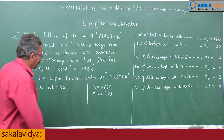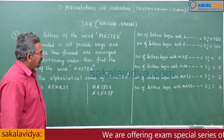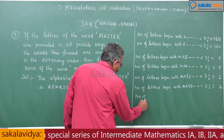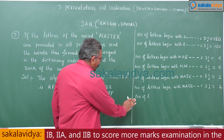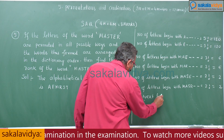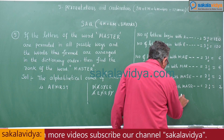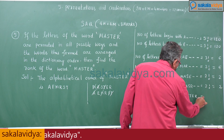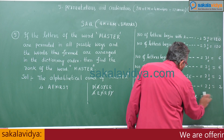Next, words beginning with MAST. After MAST, the remaining letters in order are E and R only, which gives us MASTER itself. So there is only 1 factorial = 1 way, and the next word is MASTER.